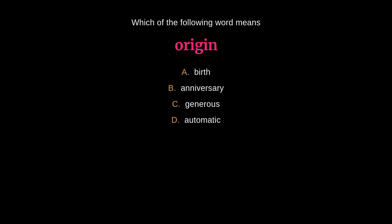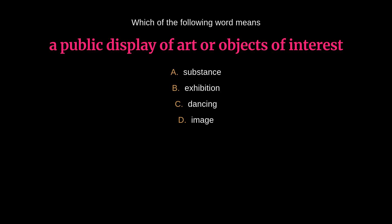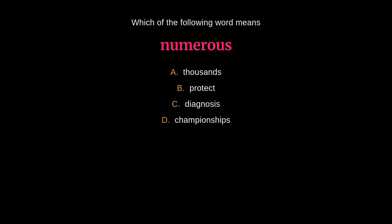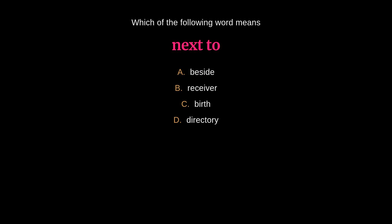Which of the following words means Origin? The answer is A: Birth. Which of the following words means a public display of art or objects of interest? The answer is B: Exhibition. Which of the following words means Numerous? The answer is A: Thousands. Which of the following words means Next to? The answer is A: Beside.